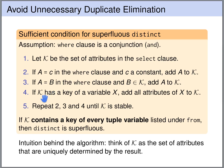The fourth clause says that if our set K contains a key of some tuple variable X, then we add all the attributes of X to K. The reasoning is that if K contains a key of X, it uniquely determines the row of X, and therefore all attributes of X — so we can add all of them to K. We repeat steps 2, 3, and 4 until K is stable, meaning we cannot add anything more.